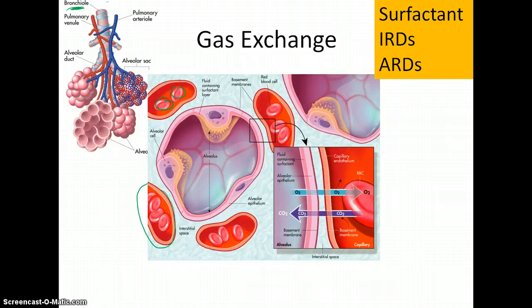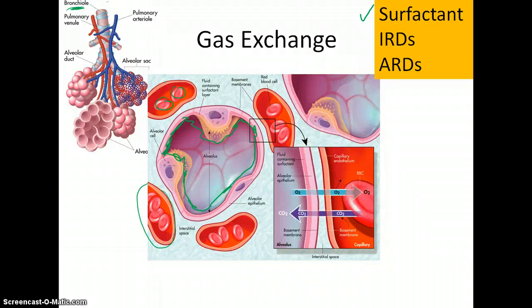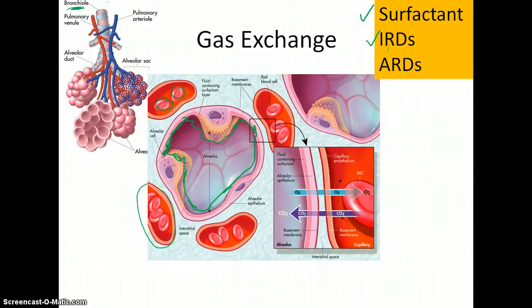Now inside the alveolus, so it doesn't collapse, is a chemical called surfactant. It coats the lining of the alveolus so that it stays open. Surfactant is one of the last things to be developed in a newborn baby, since they don't need their lungs inside the womb. So oftentimes premature babies have a very difficult time breathing and may have to be on a ventilator until their body starts to develop surfactant, because their alveoli just can't stay open — they recoil. These babies may be diagnosed with infant respiratory distress syndrome.